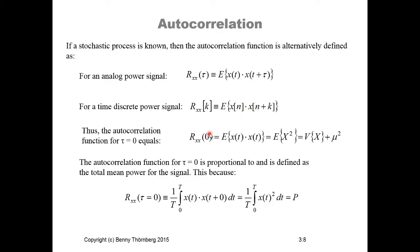For the autocorrelation function, if τ is equal to zero — meaning there is no time difference between the points we analyze — then the autocorrelation function will be equal to the expected value of x(t) multiplied by x(t), which is the expected value of x squared. This will be known as the total mean power, and it is equal to the variance of x plus the mean value squared. The autocorrelation function for τ equal to zero is thus defined as the total mean power of the signal.